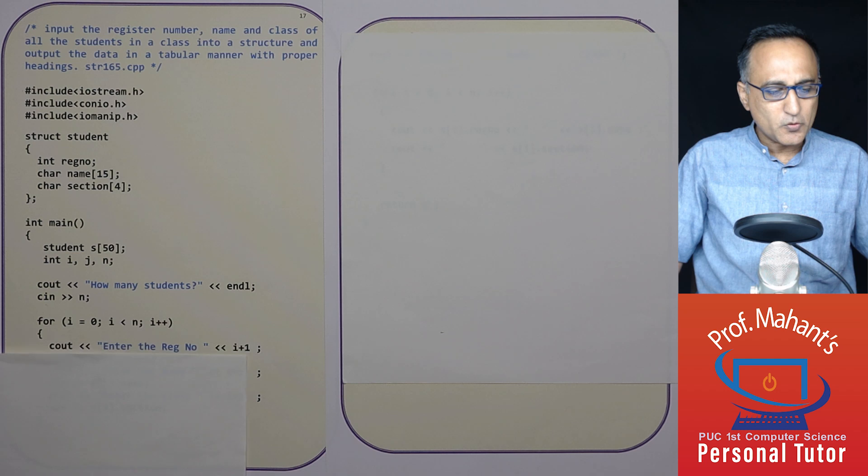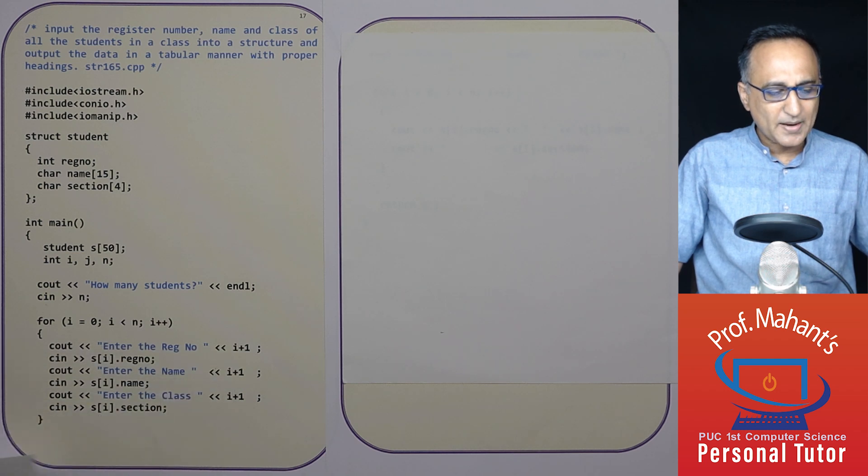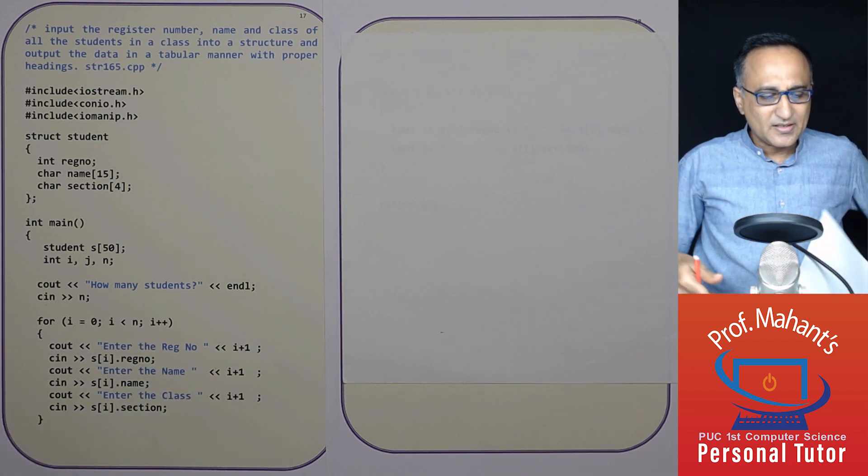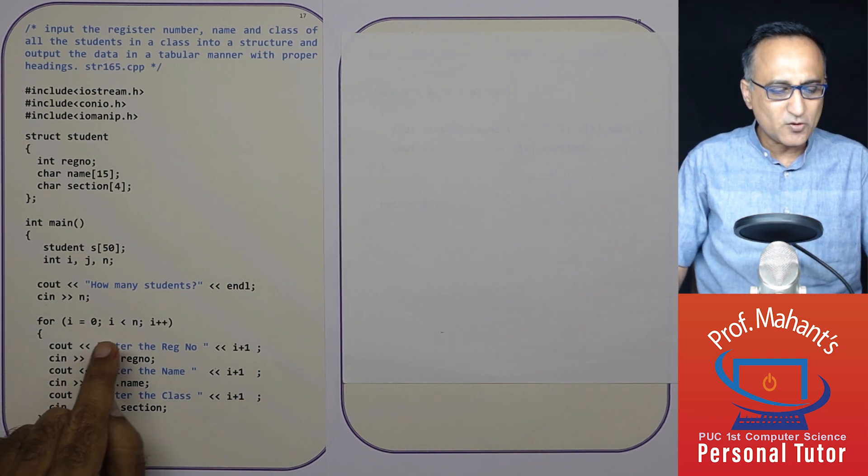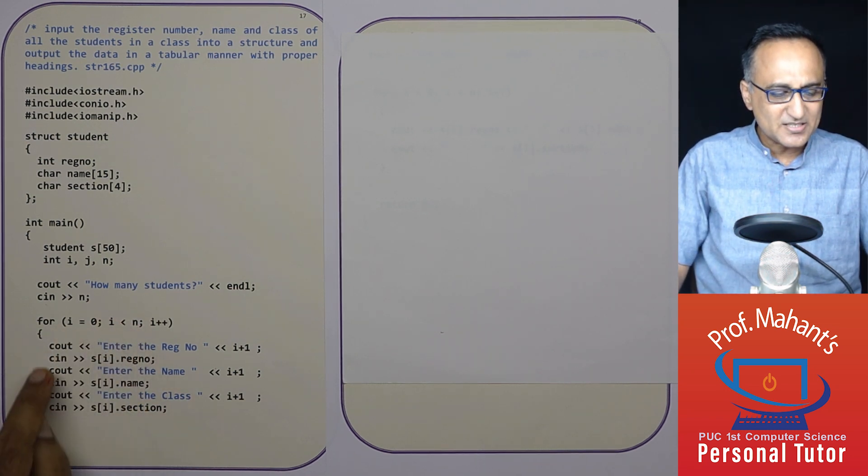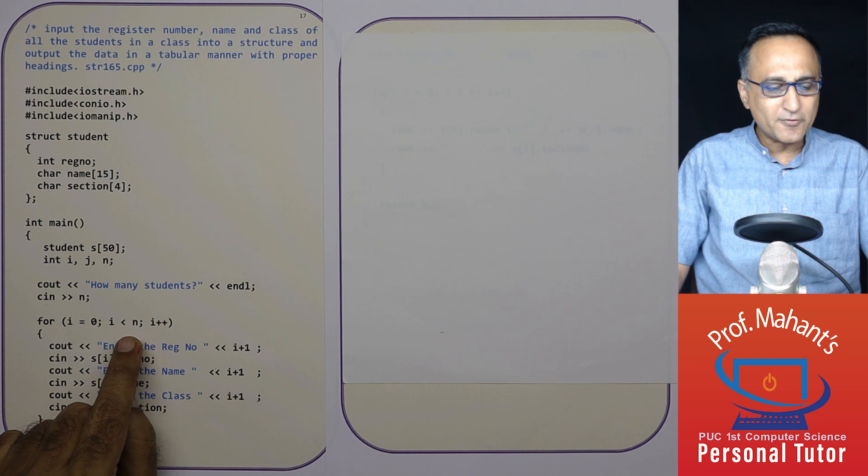Now what I'm going to do here is using the for loop, I am just going to read the data for each student. i is zero, i less than n. This is a simple loop based on the value of n.